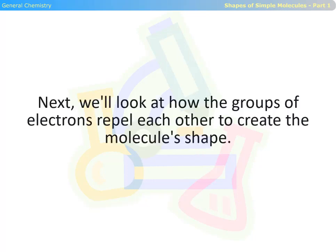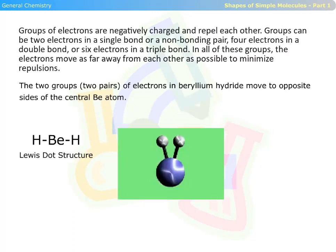Next, we'll look at how the groups of electrons repel each other to create the molecule shape. Groups of electrons are negatively charged and repel each other. Groups can be two electrons in a single bond or a non-bonding pair, four electrons in a double bond, or six electrons in a triple bond. In all of these groups, the electrons move as far away from each other as possible to minimize repulsions.